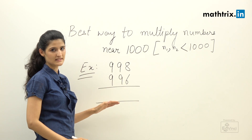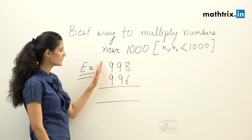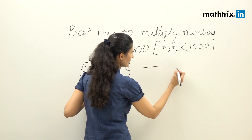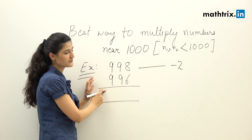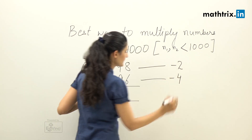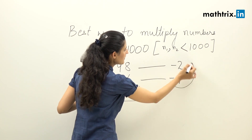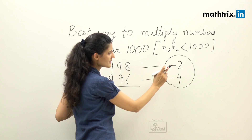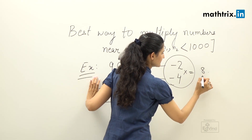It can be calculated in three simple steps. Step number one: we will find the difference of these numbers from thousand. The difference of 998 from thousand is minus two, and the difference of 996 from thousand is minus four.